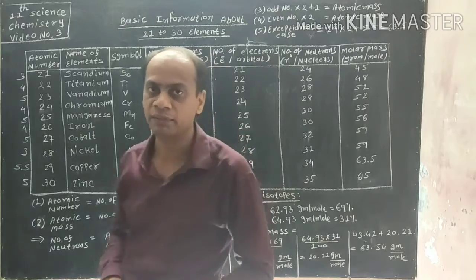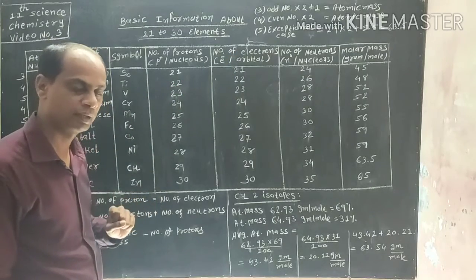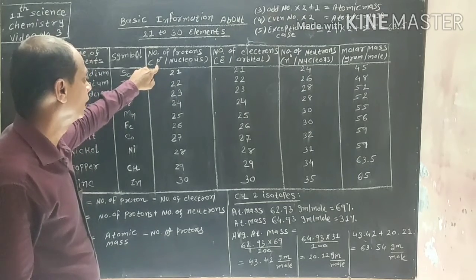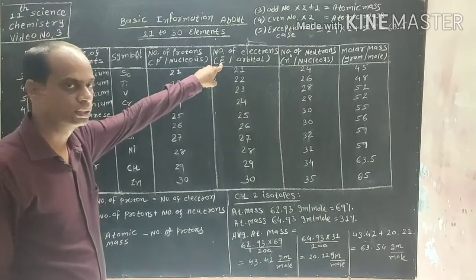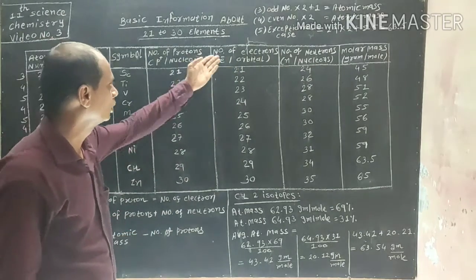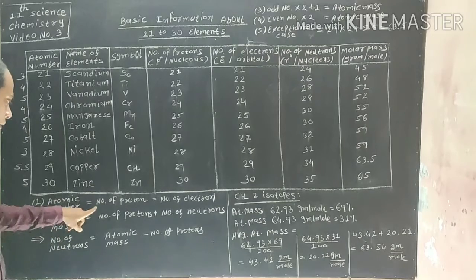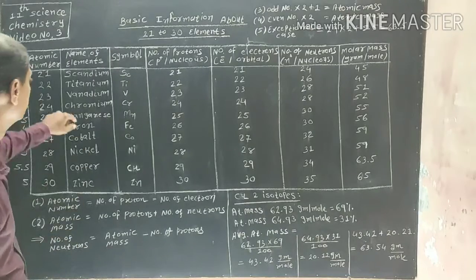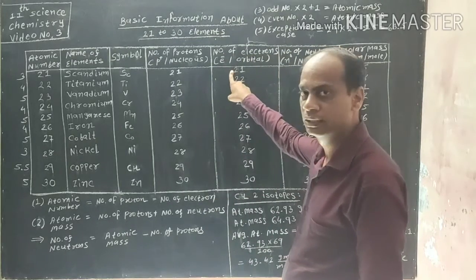So these are the symbols for elements 21 to 30. Now let us discuss the number of protons and number of electrons. Protons, symbol small p, are positively charged and present in the nucleus. Electrons, symbol small e, are negatively charged and present in orbitals. As per videos 1 and 2, the atomic number equals the number of protons and electrons. So for Scandium, atomic number is 21, meaning number of protons and electrons are 21.